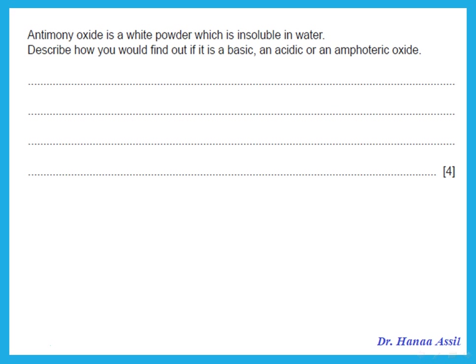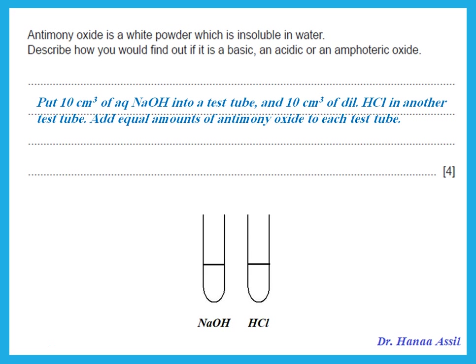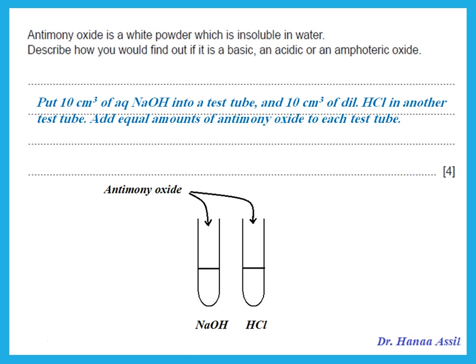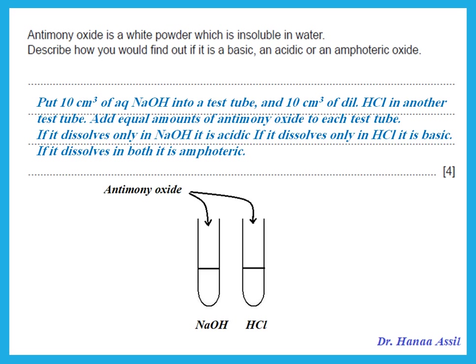Antimony oxide is a white powder which is insoluble in water. Describe how you would find out if it is basic, acidic, or amphoteric. Put equal amounts of sodium hydroxide and hydrochloric acid in two separate test tubes, then add equal amounts of antimony oxide to each. If it dissolves only in sodium hydroxide and not in HCl, it is acidic. If it dissolves only in HCl and not in the base, it is basic. If it dissolves in both, it is amphoteric.